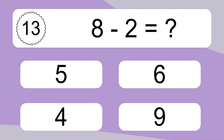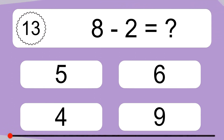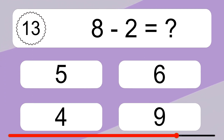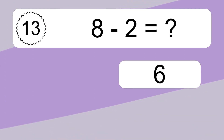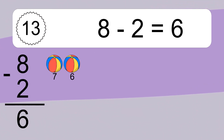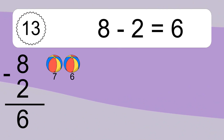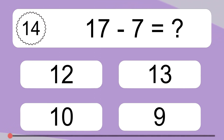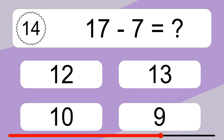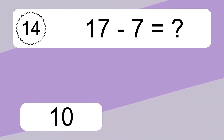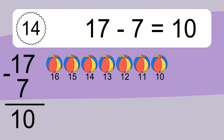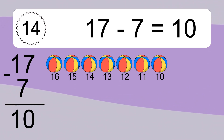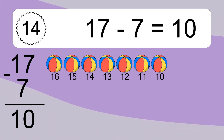8 minus 2 equals what? 8 minus 2 equals 6. Let's count it: 7, 6. 17 minus 7 equals what? 17 minus 7 equals 10. Let's count it: 16, 15, 14, 13, 12, 11, 10.